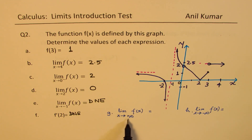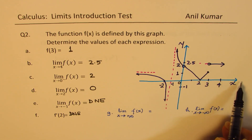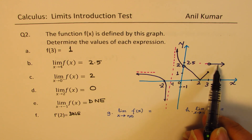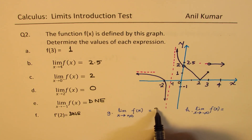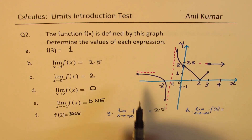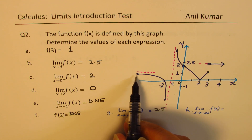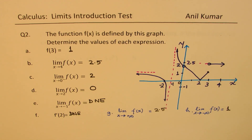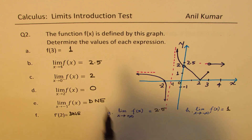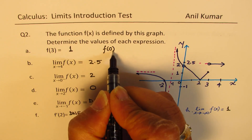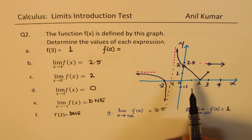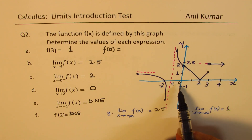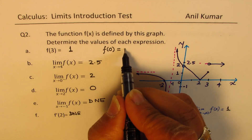I have added two more questions. G: Limit when x approaches positive infinity. When you go to the positive infinity side, the value of the function is 2.5, so this limit is 2.5. H: Limit when x approaches negative infinity. We are approaching a value of 1, so that answer will be 1. Also, what is the value of the function at 0? At 0, the function is not really defined, so this does not exist.